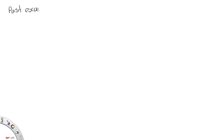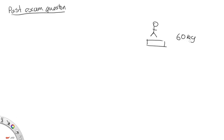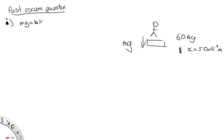Past exam question, part 1. A student stands on scales that read her mass as 60 kg, and the internal spring compresses 5.0 × 10⁻³ meters. We're asked to calculate the spring constant. When compressed, the student applies force Mg downward, balanced by the spring force Kx. So K = Mg/x.